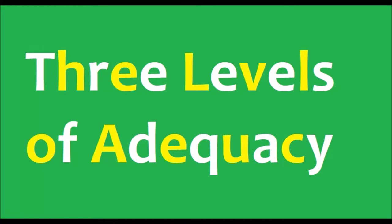Chomsky in 1965 proposed the levels of adequacy in order to judge how good theories of syntax are. The following are the three levels of adequacy: 1. Observational adequacy.